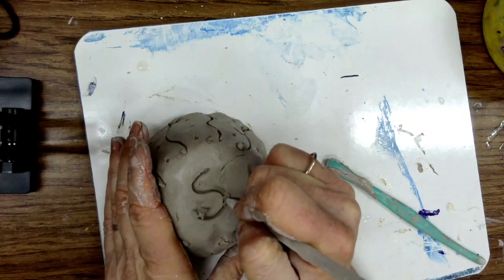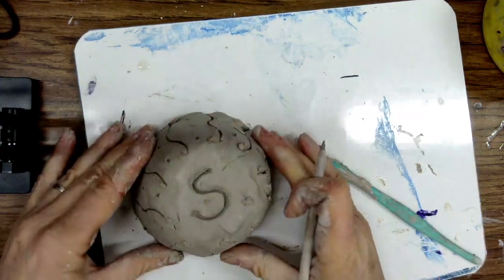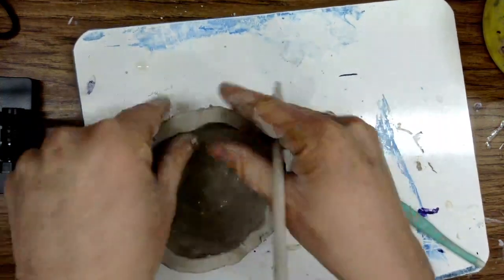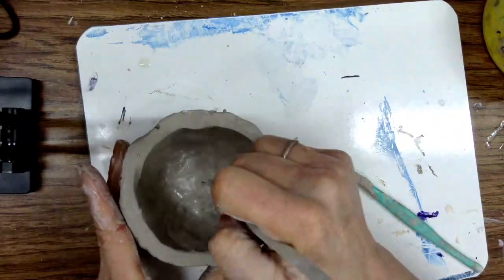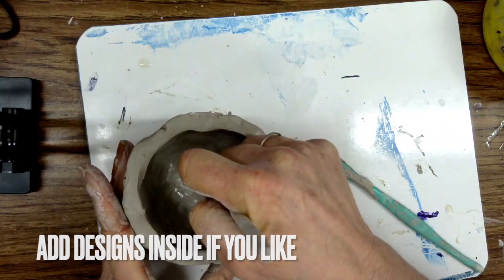When you're finished, don't forget to put your initials on the bottom. You want to make sure you get the right pinch pot back when it comes out of the kiln. Add designs on the inside as well.